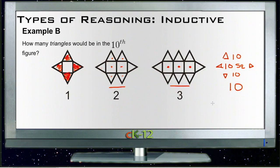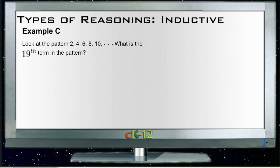That tells us we'd have 10 plus 10 is 20, plus 2, so figure 10 would have 22 triangles. Example C says look at the pattern: 2, 4, 6, 8, 10. What is the 19th term in the pattern? Let's write out 1, 2, 3, 4, 5, 6 - their places in the pattern - and put the actual values above it.